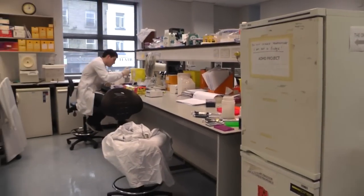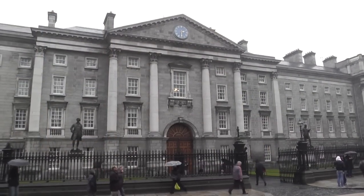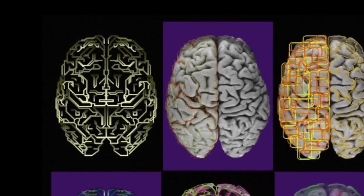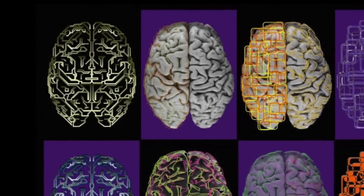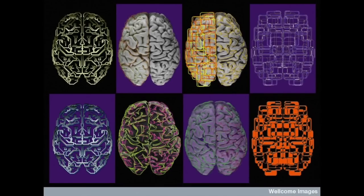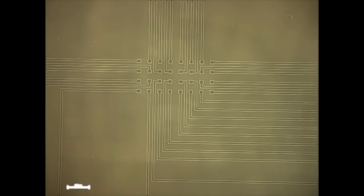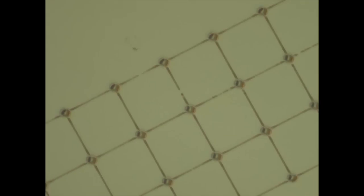Integrating the nanomedicine and neuropsychiatric genetics labs in Trinity College, Dublin, my research project involves the design and validation of a device that can model brain connections and probe specific questions about brain development. The device functions by forming an electrical interface between microelectrodes embedded within the glass and neurons that are patterned and grown on the device surface.